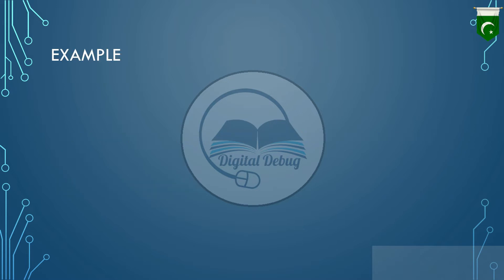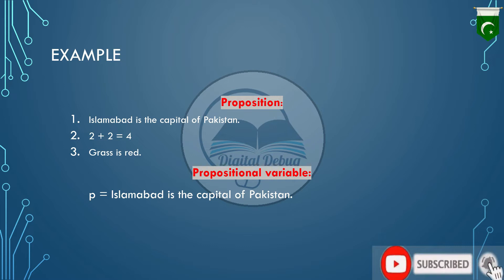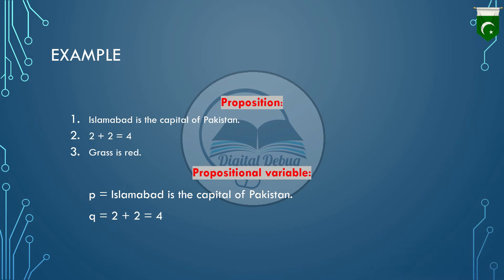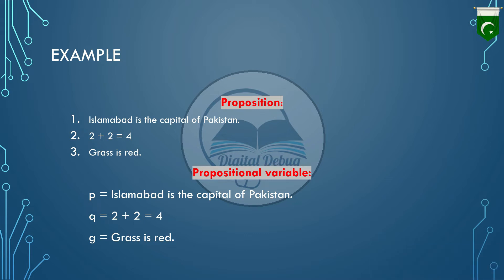Let's take an example. We have some propositions: Islamabad is the capital of Pakistan; 2 plus 2 equals 4; Grass is red. The proposition 'Islamabad is the capital of Pakistan' can be represented with variable P. Similarly, '2 plus 2 equals 4' is represented with variable Q, and 'Grass is red' with variable G. Instead of writing the long statement again and again, we use these variables.